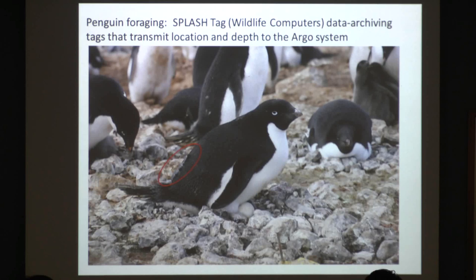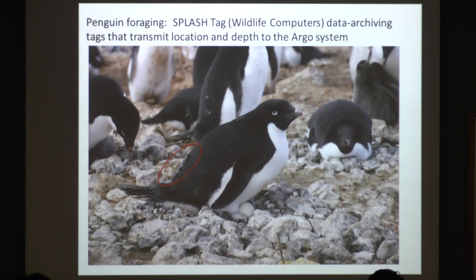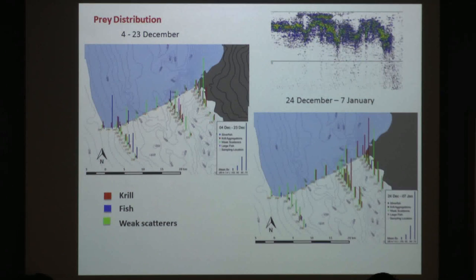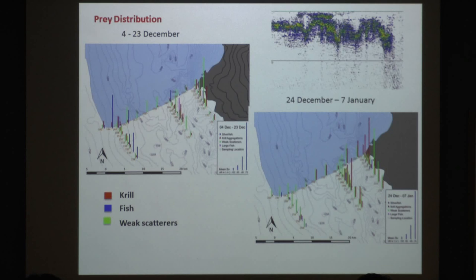We also put satellite tags on the predators to track their feeding. You can just barely see a small tag — these tags have gotten much smaller over the years; they used to be huge, and whenever they put one on a penguin nobody else would come near it because they looked so weird, but now they're melding back into the population. For killer whales, you can't just go up and attach a tag, so they use a crossbow to deploy them.